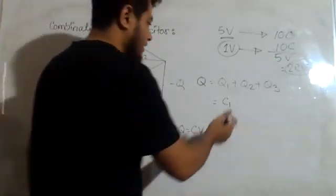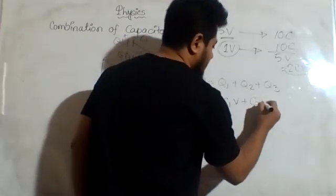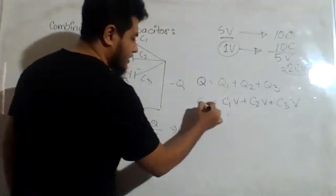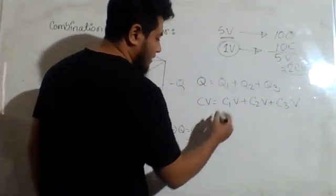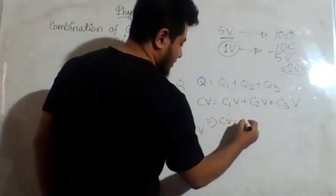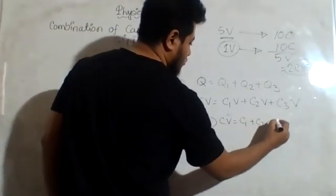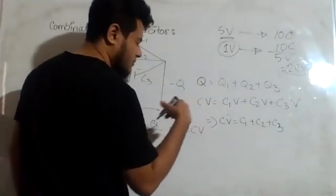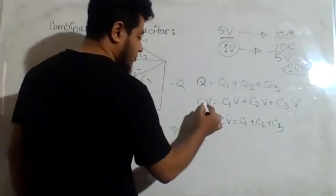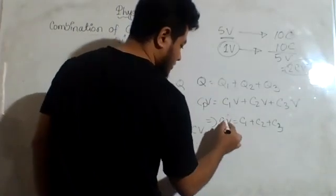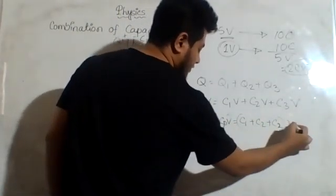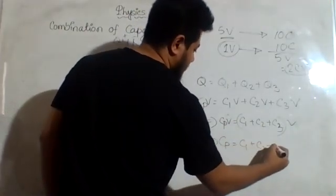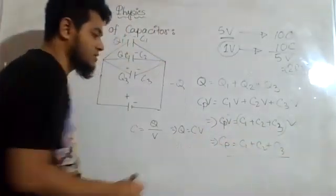So, Q equals C1·V plus C2·V plus C3·V. The equivalent capacitor for parallel connection is Cp. Therefore Q equals Cp·V, and thus Cp equals C1 plus C2 plus C3. This is our equation for the equivalent capacitance of a parallel combination.